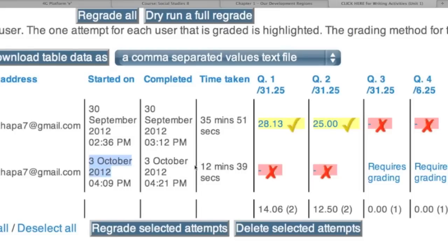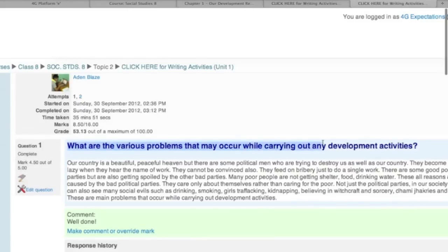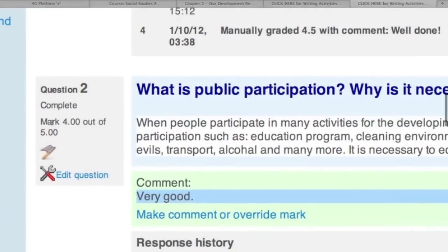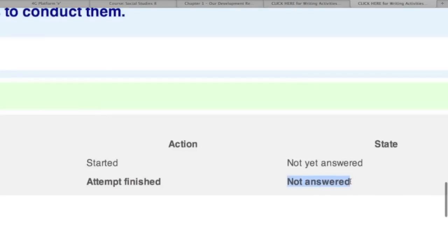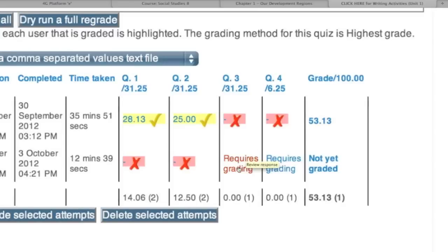The student did it on the 3rd of October, and it is 25 October today. It's three weeks already, and the teacher has not seen the student's homework yet. The student spent about 35 minutes for the first attempt, and for the second about 12 minutes. Let's look at the graded one and see what feedback and the mark the teacher has given for it. This was the question, and this is the student's answer, and the teacher awarded 4.5 marks out of 5 for this question with the comment, Well done. And for the second question, he awarded 4 out of 5 with the comment, Very good. And the student has not done question number 3 and 4. That's why he got the red crosses for these two questions. So he did the remaining questions next time on the 3rd of October, which have not been marked yet.